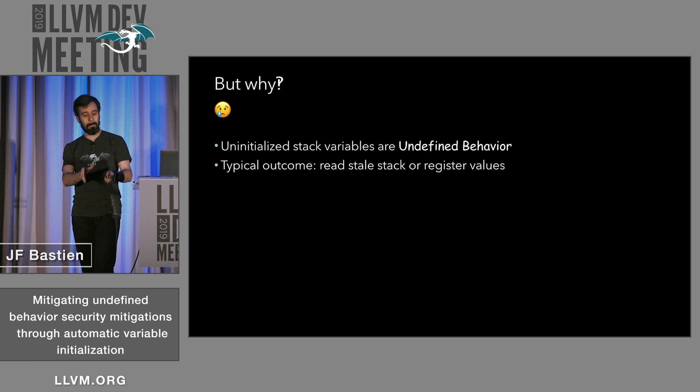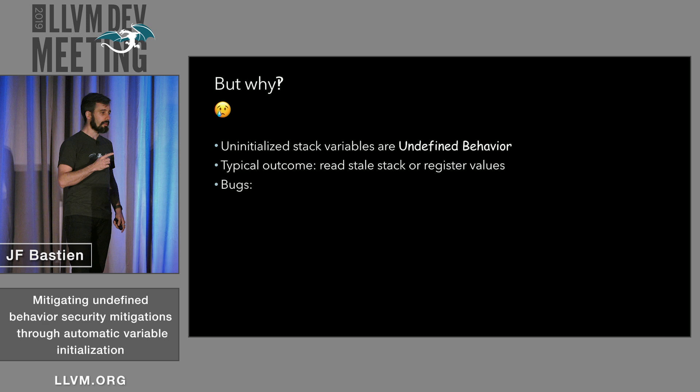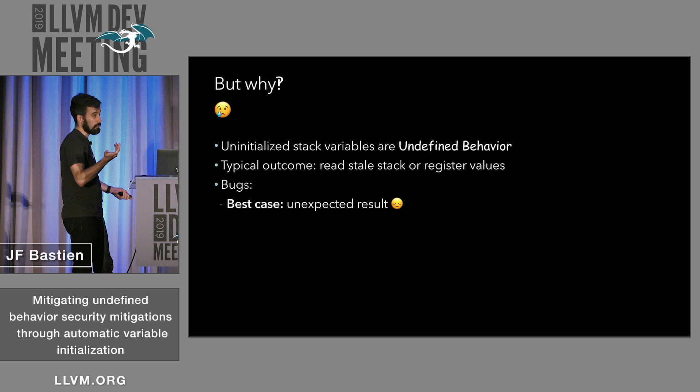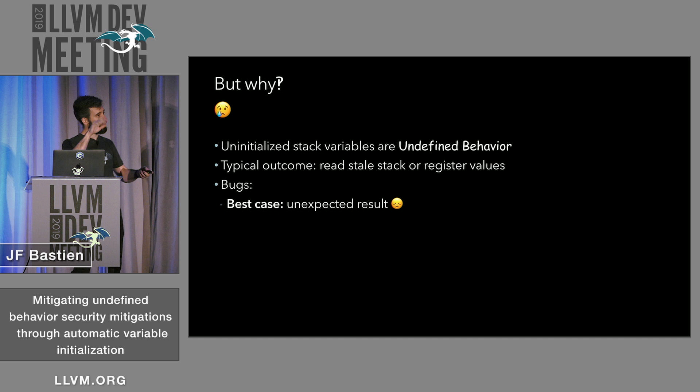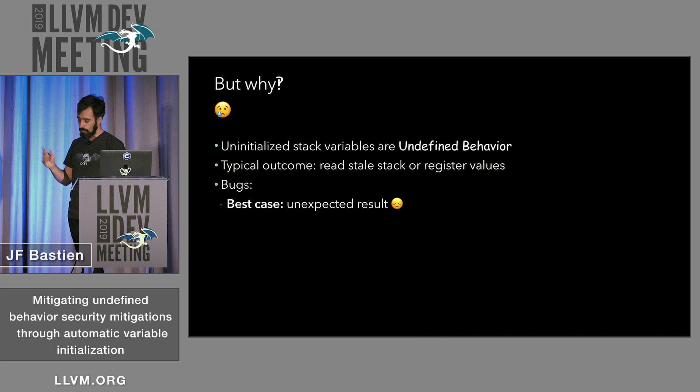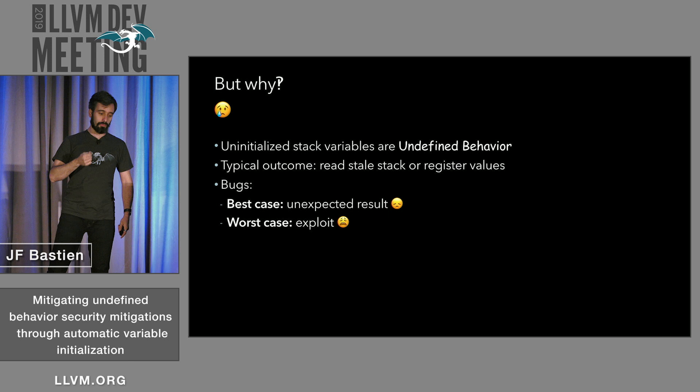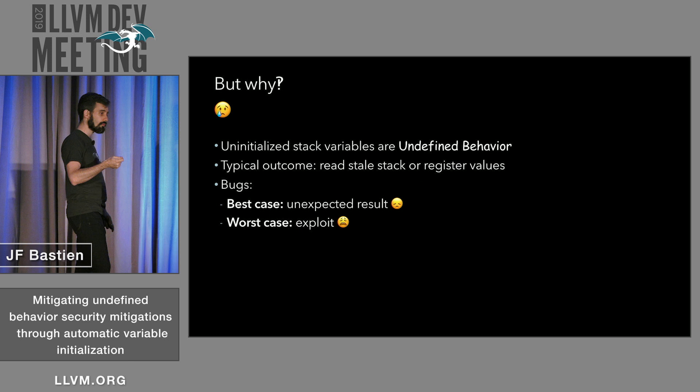That leads to two types of bugs. The first is just an unexpected result — you run your code, read an uninitialized value, and something weird happens, like a triangle flickering in a graphics application. I don't really care about that. The worst case is an exploit. If you have security-sensitive code and use a stale variable, that can sometimes be exploitable. That's what I'm trying to mitigate — preventing you from leaking secrets and using attacker-controlled values.